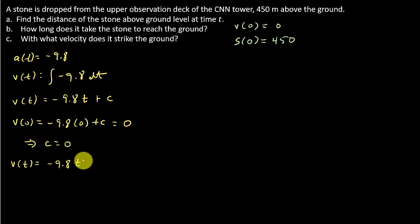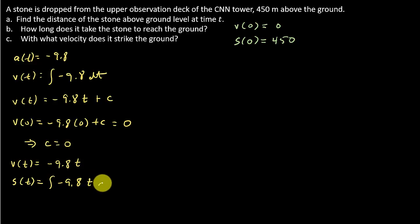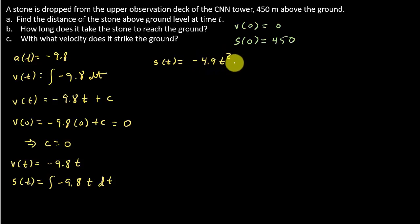Now let's find the position function. The position function is the antiderivative of the velocity function. If I integrate v(t) = -9.8t, I get s(t) = -4.9t² plus a constant term. In this problem I'll use d as my constant since I already used C, just using a different variable for my constant.